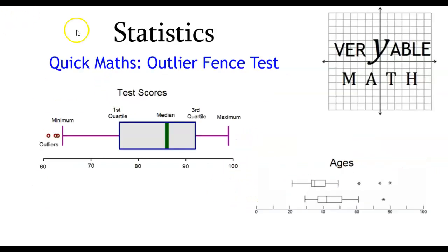All right, this was a quick maths tutorial on the outlier fence test. And you also got a little bonus about box and whisker diagrams and a siren in the background. All right, folks, good luck studying.